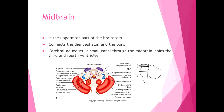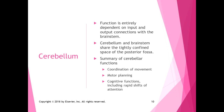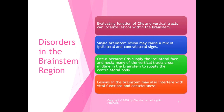As a review, the cerebellum — already covered in its own chapter — has function entirely dependent on input and output connections with the brainstem. The cerebellum and brainstem are crammed into the tightly confined space of the posterior fossa of the cranium. Cerebellar functions include coordination of movement, motor planning, and cognitive functions including rapid shifts of attention — all requiring that brainstem input and output.